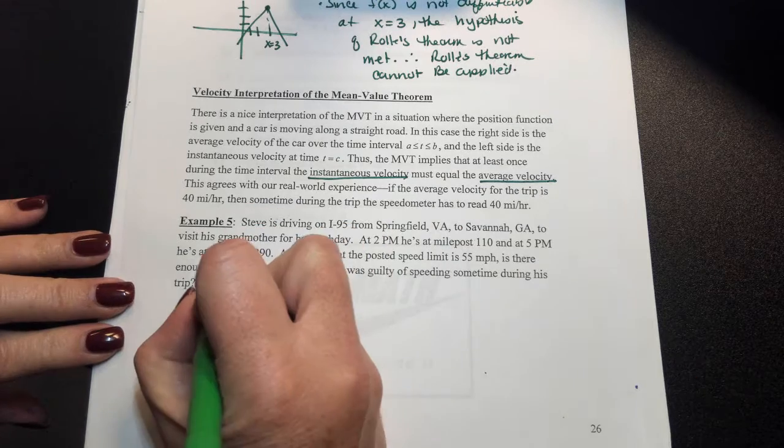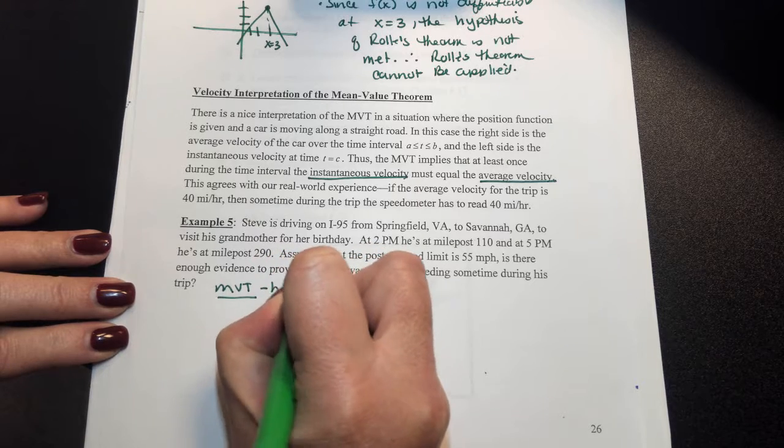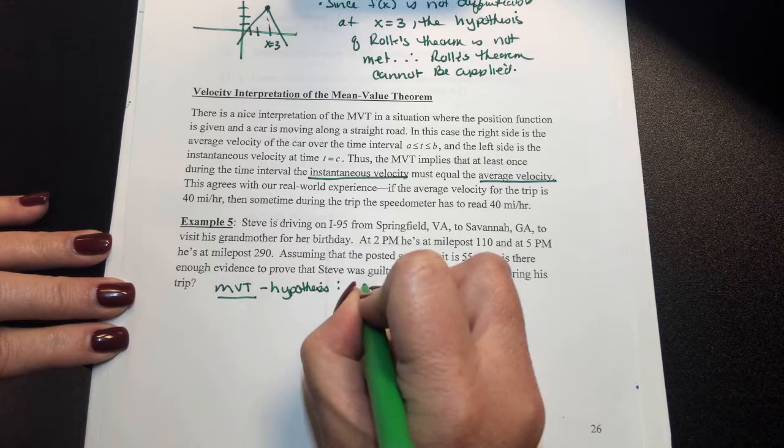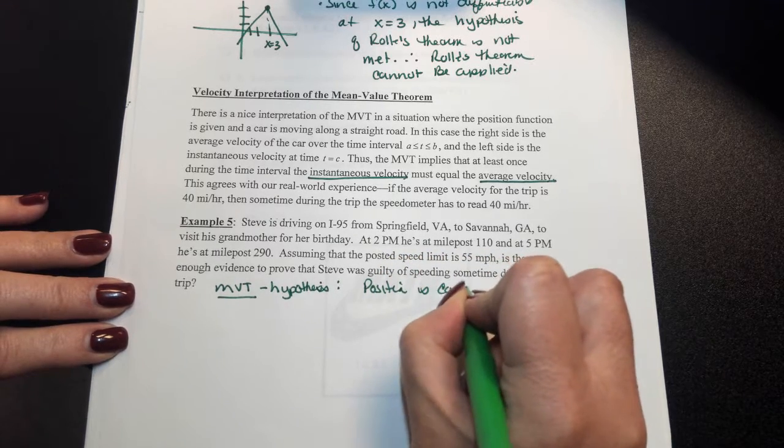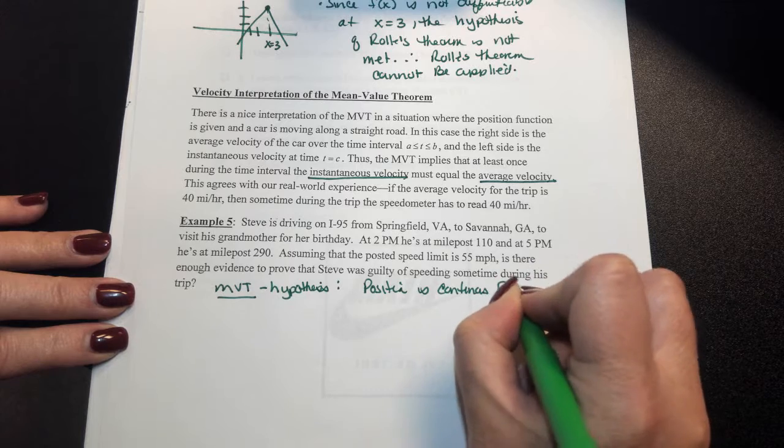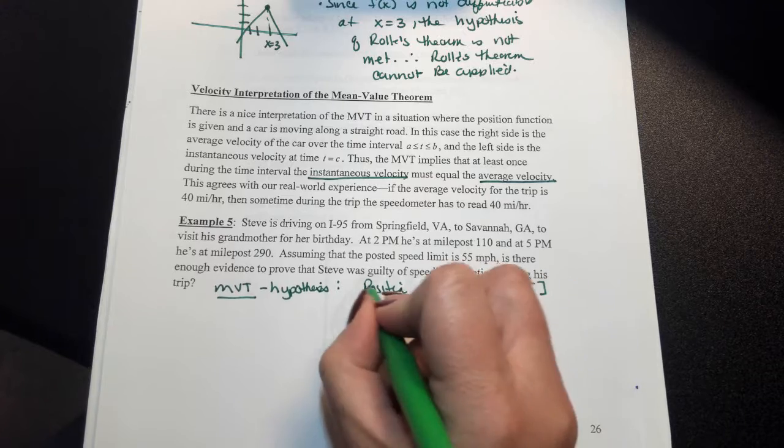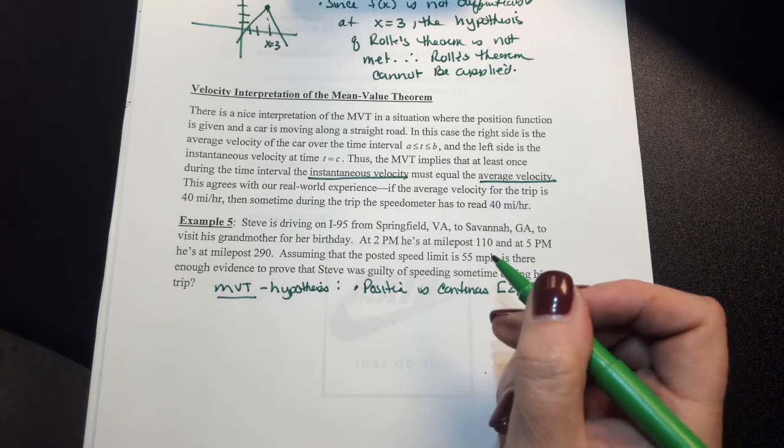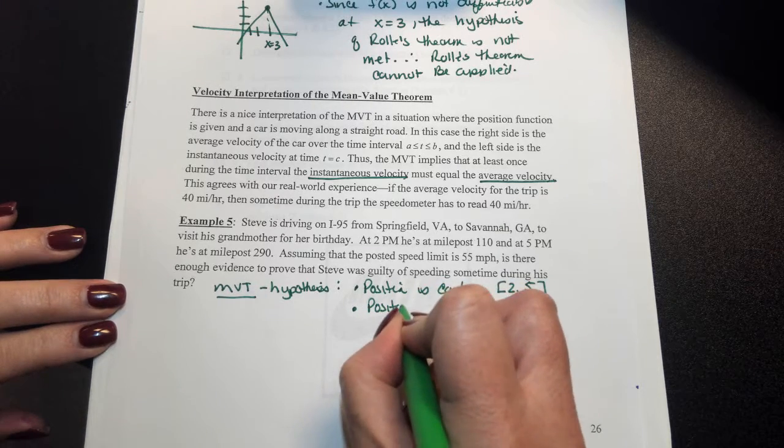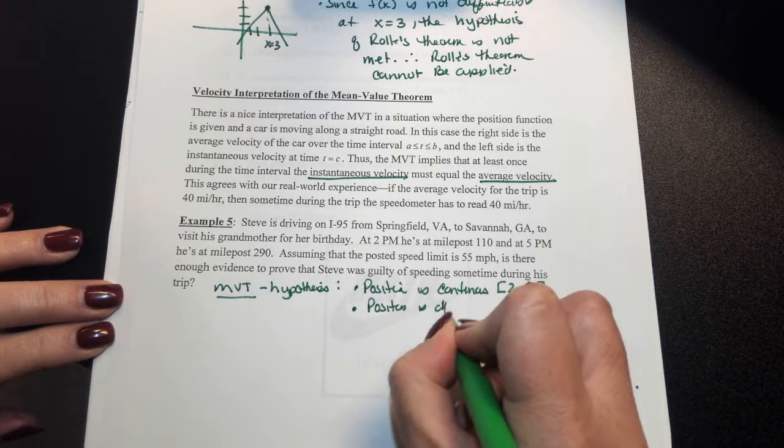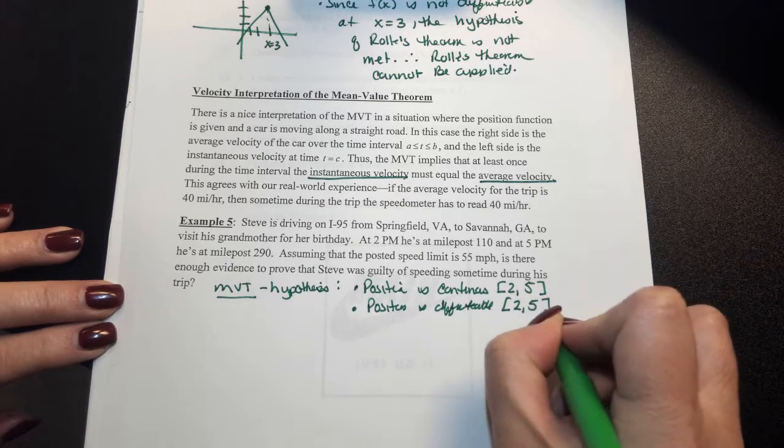We can apply the mean value theorem. And again, if you state your hypothesis, the position is continuous over this time interval from 2 p.m. to 5 p.m. Hopefully, there's no breaks, jumps, or gaps in the road when he's driving. Otherwise, we've got a problem. And again, the position is differentiable from your time period 2 to 5.